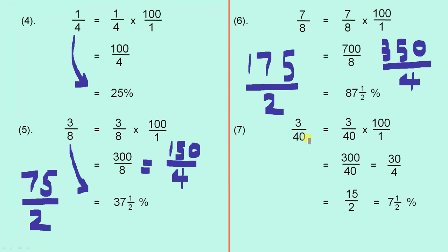And finally three over forty. That's three over forty times a hundred over one, which gives you three hundred over forty. We divide top and bottom by ten, giving us thirty over four. Then we divide top and bottom by two, giving us fifteen over two. And we know that half of fifteen is seven and a half. So three over forty is seven and a half percent.